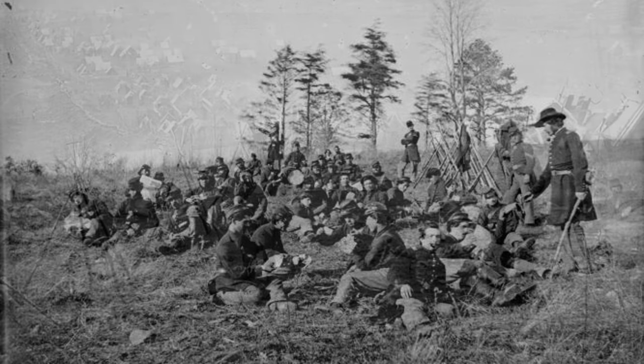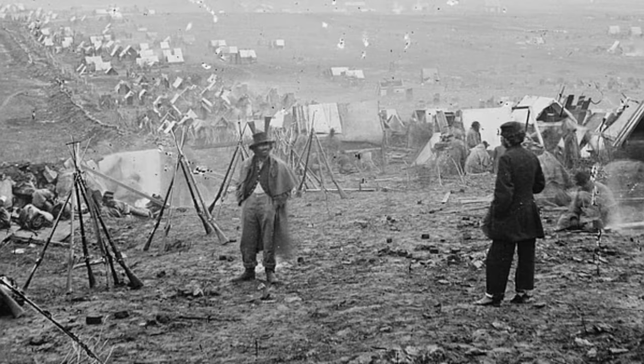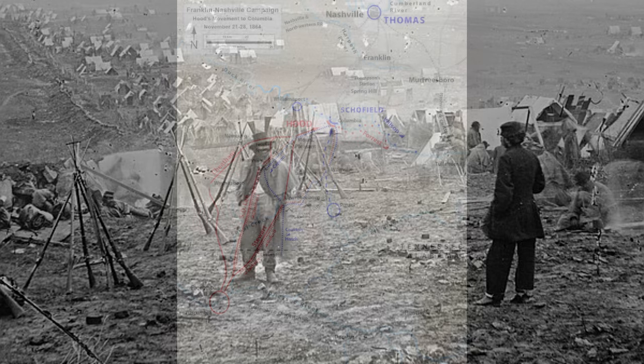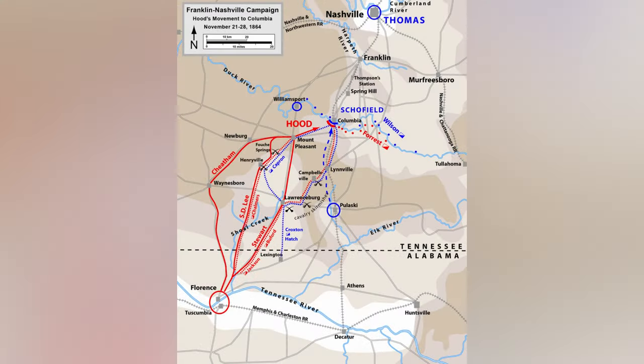The Confederate forces managed to pry Schofield from his position, prompting a withdrawal to Columbia. Hood, seizing the opportunity, opted for a flanking maneuver to cut off Schofield from Nashville.